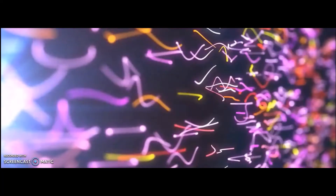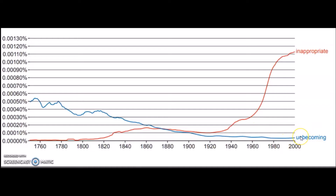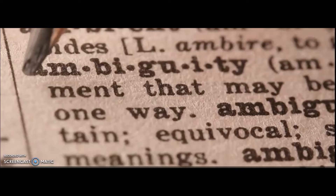The first factor may be semantic shift, which means a change in meaning. 'Unbecoming' traditionally refers to behavior or actions considered improper in terms of social norms, manners, or expectations. However, as societal norms and values evolve, the concept of what is considered unacceptable behavior may have broadened. 'Inappropriate' has a broader and more flexible connotation, encompassing a wider range of behaviors or actions that are not fitting in a given context.